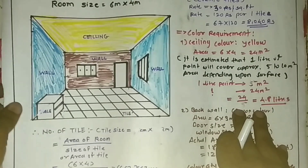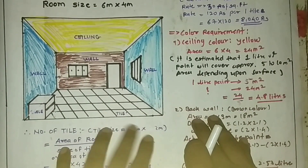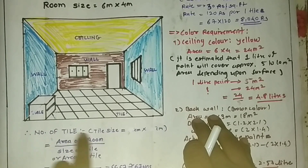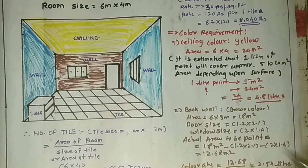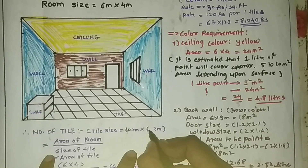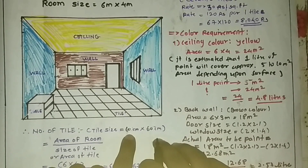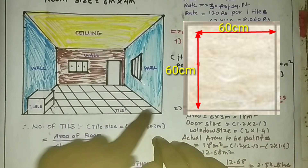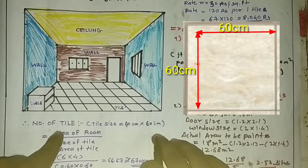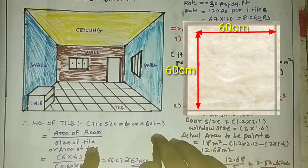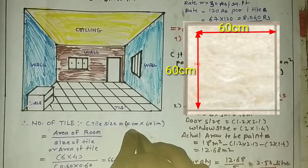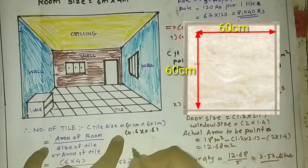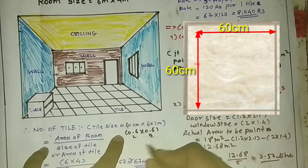First we will find out the number of tiles required for this floor area. I took a tile size of 60 centimeters by 60 centimeters. To find the number of tiles, you use the formula: area of room divided by area of one tile. The area of one tile is 0.6 multiplied by 0.6.